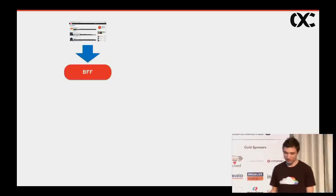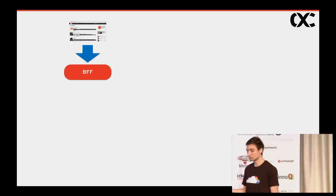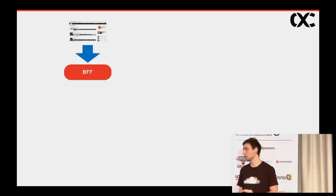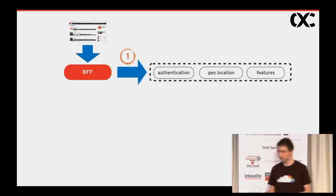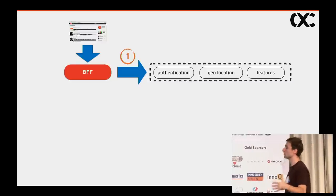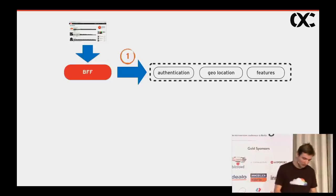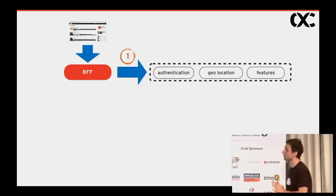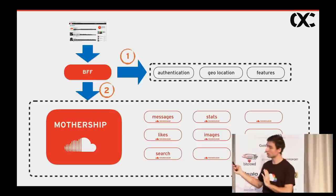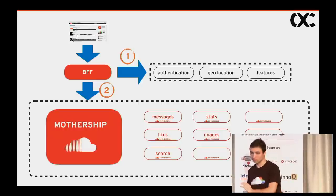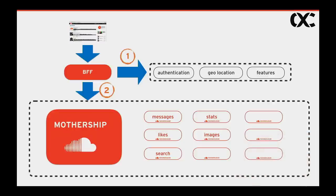When a request arrives at a BFF, what happens next is in two parts. The very first step is what I call gathering the contextual data around the incoming request. This includes getting the user session data, detecting the geolocation of the incoming request, and figuring out what business features this request has access to. All of these are implemented as microservices. The BFF talks to each of them, gathers their response data, and bundles it with the incoming request. On the second step, we send this request along with the bundled information to the microservices.